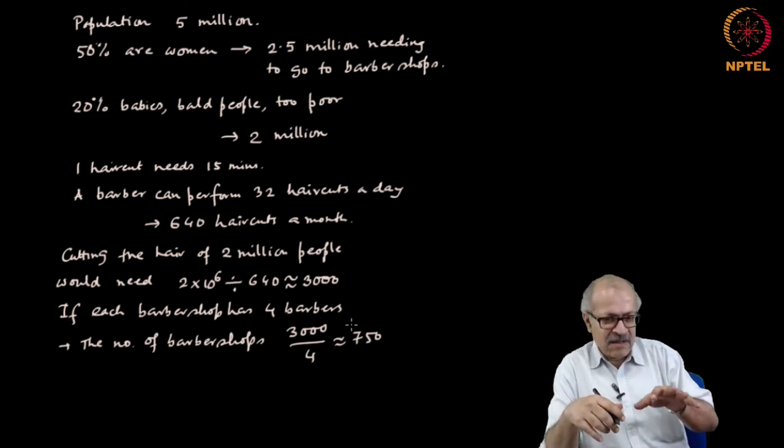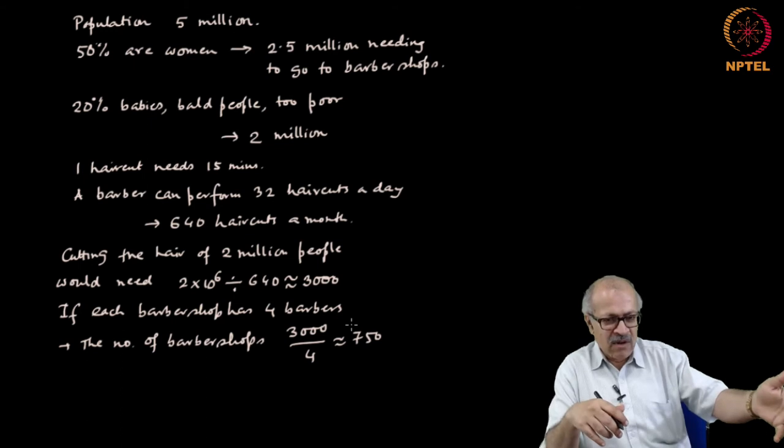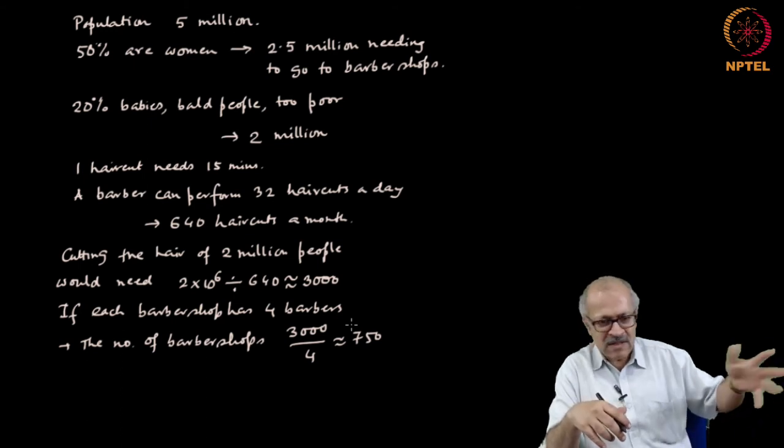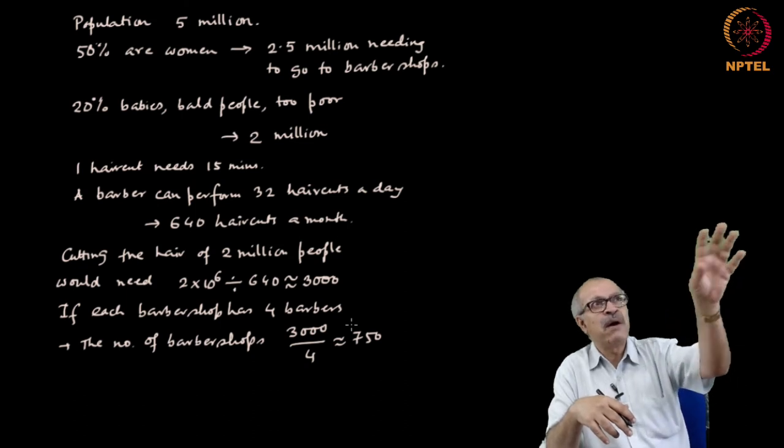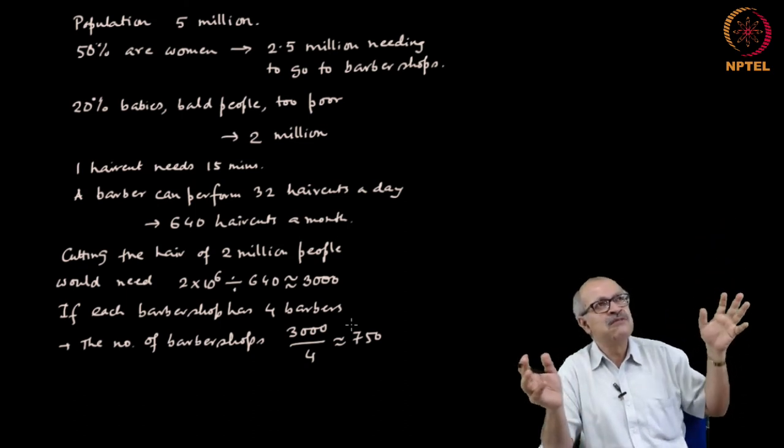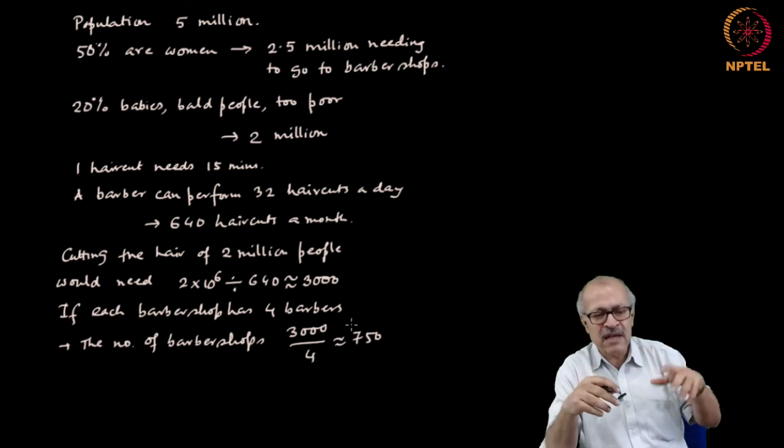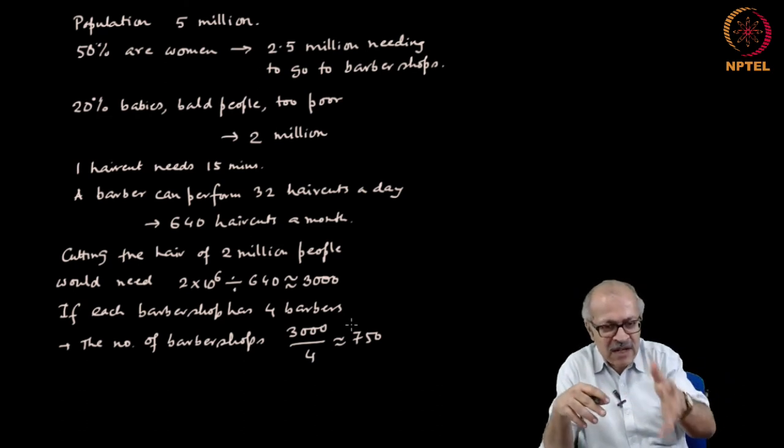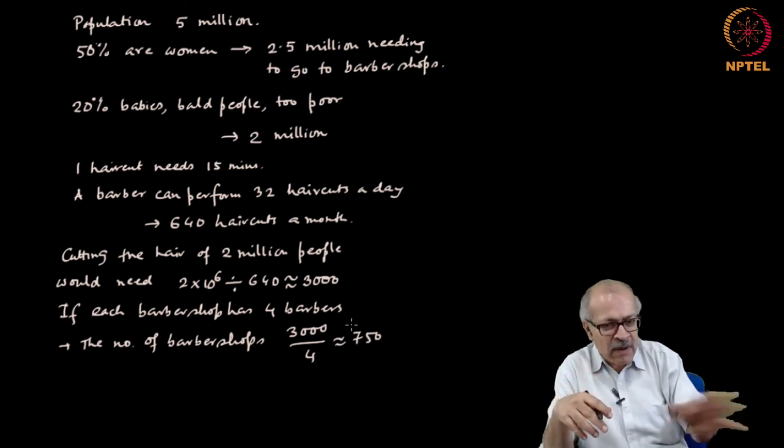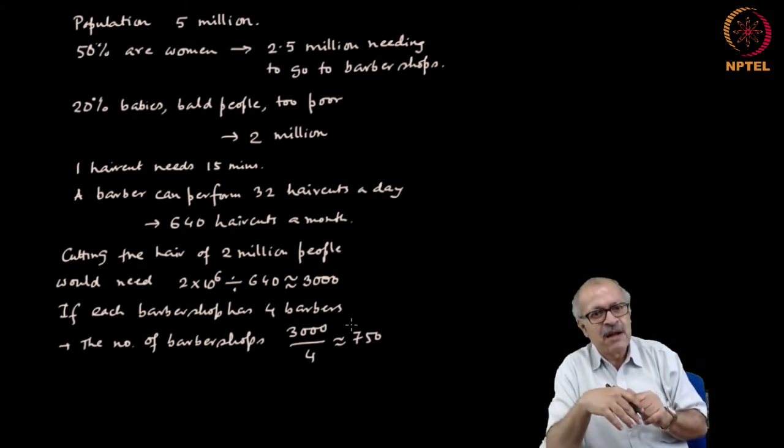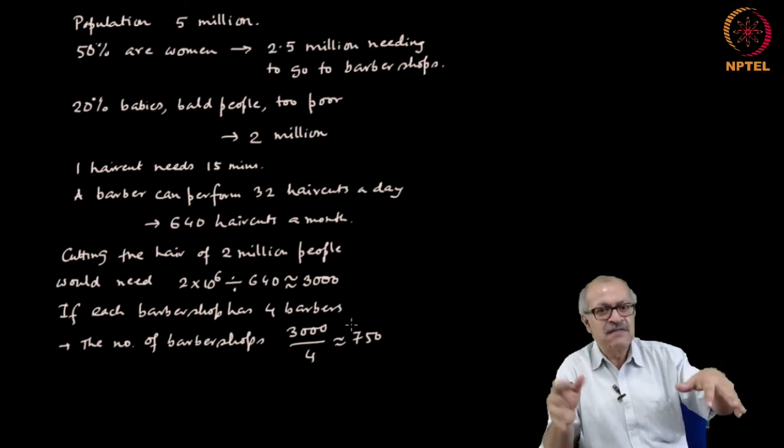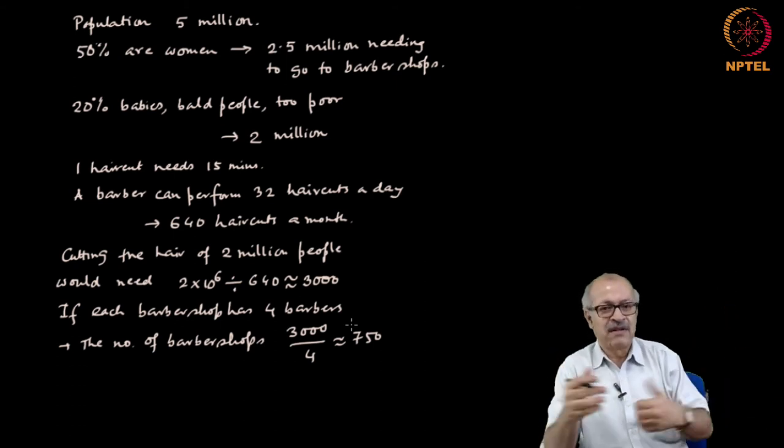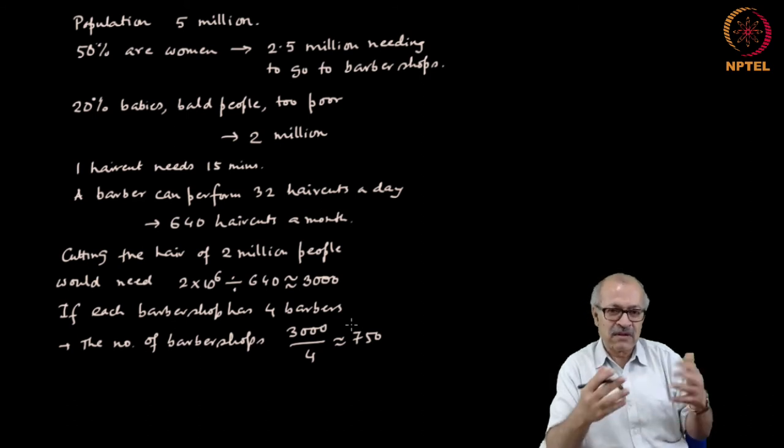Such order of magnitude calculations are often used by astronomers. If you want to look at a particular part of the sky, how many galaxies would be there in that particular part of the sky? If you use this kind of ballpark figure, you can estimate the number of galaxies that might be there in a particular part of the sky as visible to a particular telescope with a particular strength.